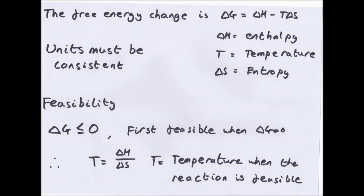Delta G equals zero, so you've got delta H minus T delta S equals zero. Move the T delta S over, so you've got T delta S equals delta H, which then you divide by delta S to get T equals delta H over delta S. T is the temperature when the reaction is feasible.